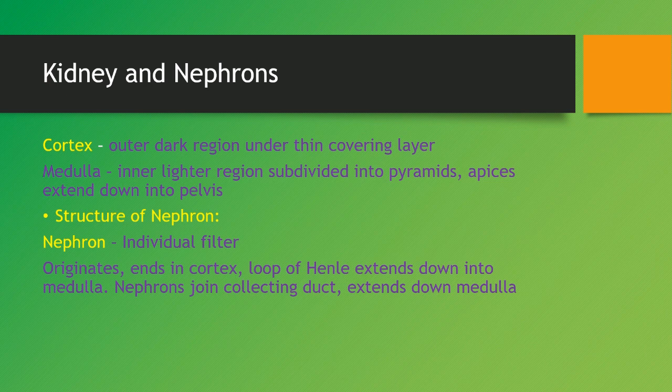There are two different parts you'll need to know: the kidney and the nephron. The nephron — there are millions of these little structures inside the kidney — is where osmoregulation, ultrafiltration, and reabsorption take place. Ultrafiltration and reabsorption are the two things that come under excretion. The cortex is the outer dark region, which sits under the thin chlorine layer. Then you have the medulla, which is your inner lighter region, subdivided into pyramids and spaces that extend down into the pelvis region. You'll be able to clearly distinguish these from a diagram, as the cortex is on the outside and the medulla is on the inside.